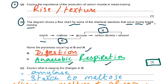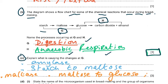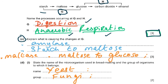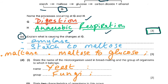Part C: explain what causes the changes at G. The changes are caused by amylase, which converts starch to maltose, and then maltase, which converts maltose to glucose. Three marks: name the two enzymes and the reactions they catalyze.